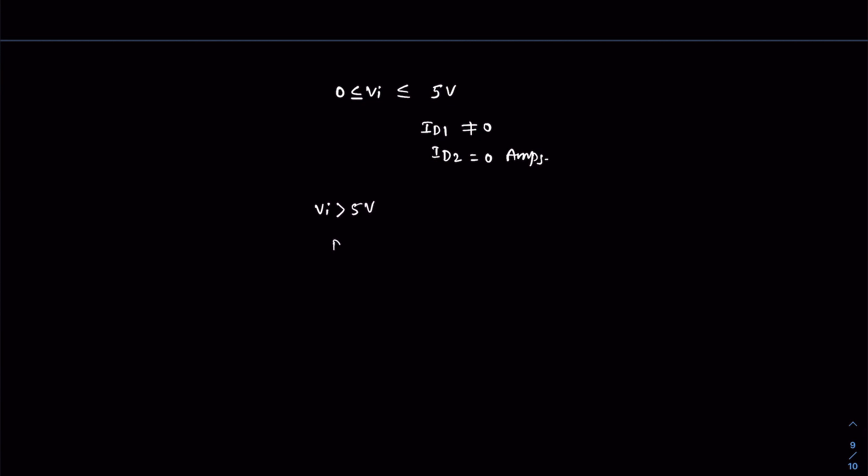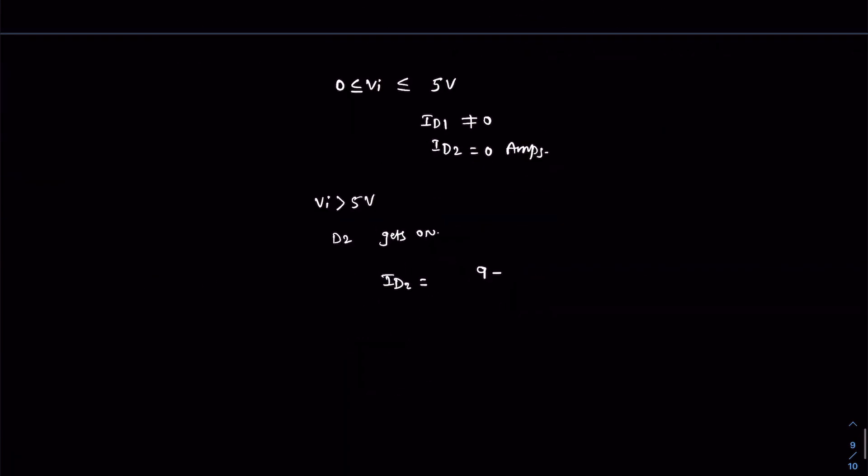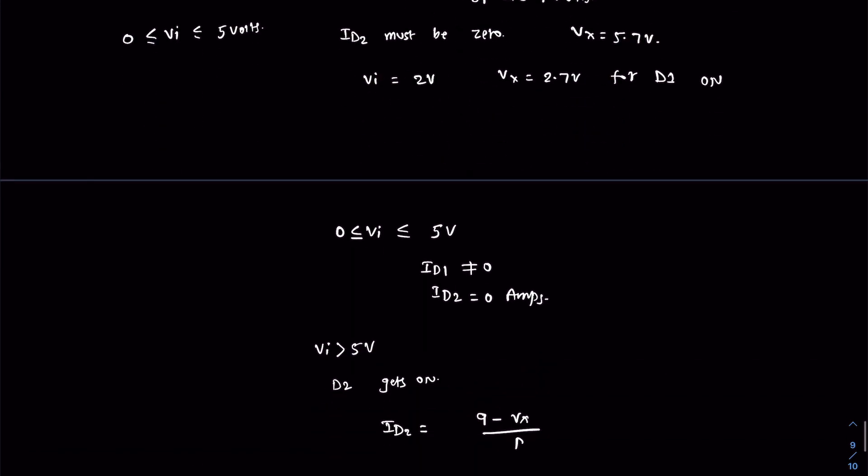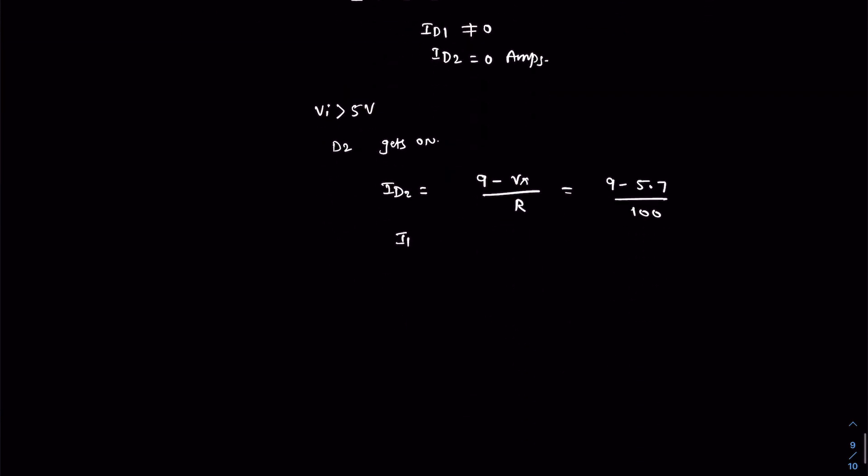Now whenever VI is greater than 5 volts, the diode D2 gets on and ID2 is nothing but 9 volts minus VX over R. So that is 9 volts minus 5.7 volts. So ID2 is nothing but 4.3 volts over 100, that is nothing but 43 volts.